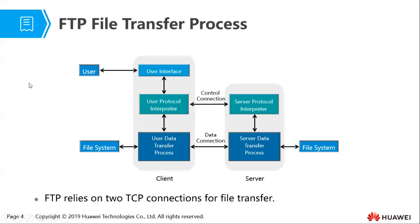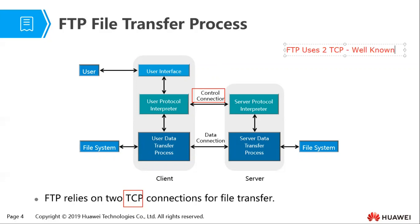FTP relies on the Transmission Control Protocol, TCP, and actually forms two different connections. The very first connection is called the control connection, which is done via port 21. FTP uses two TCP ports — these are what we call the well-known ports — port 21 and port 20. Port 21 is used for the control connection.